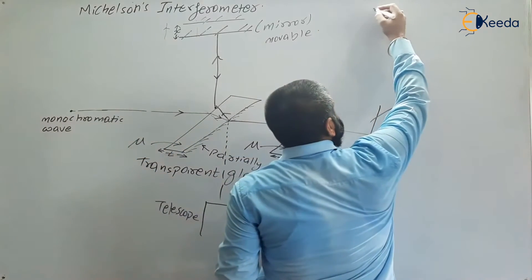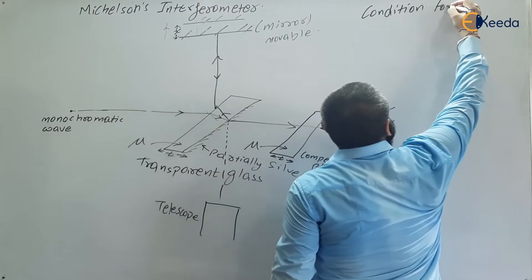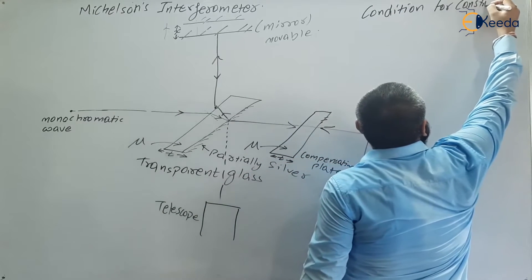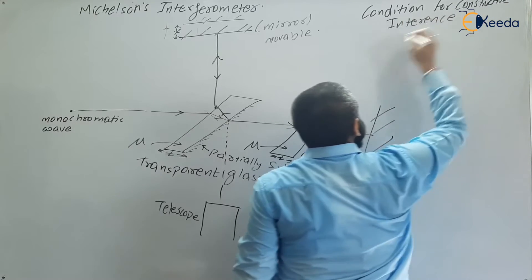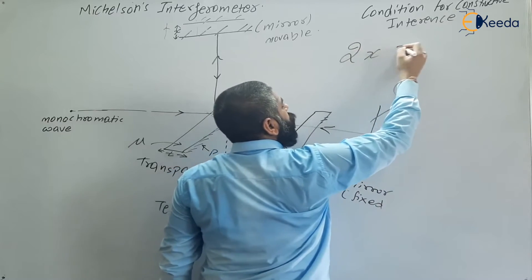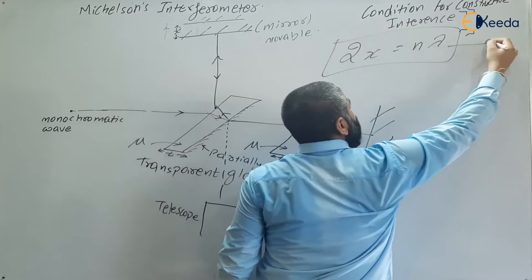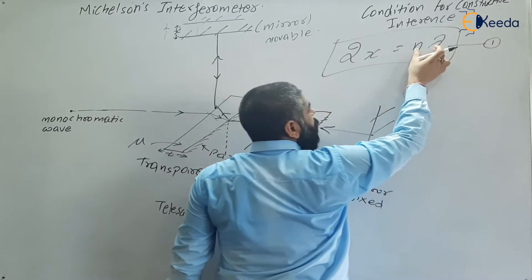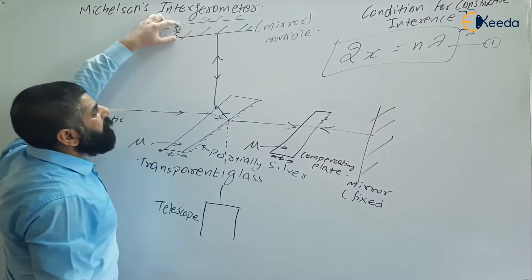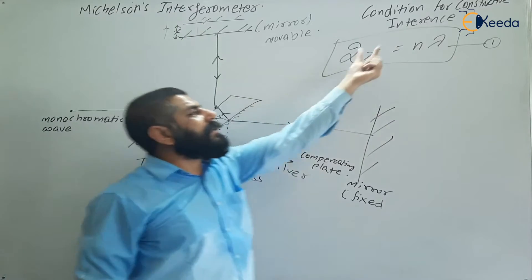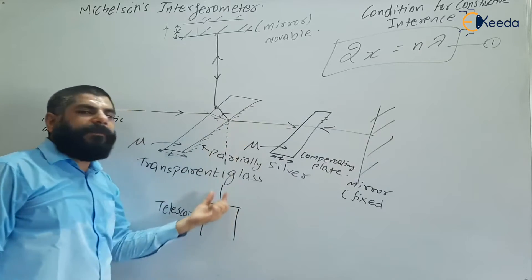The condition for constructive interference is that the path difference equals n·λ, so: 2x = nλ. This is the first equation. If 2x equals n·λ, then at the center point on the telescope we observe a bright (constructive) interference fringe.